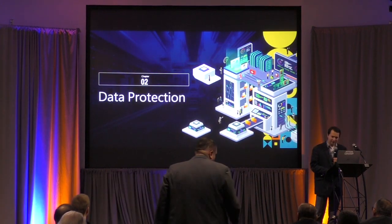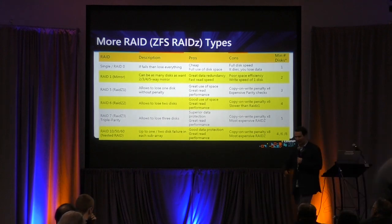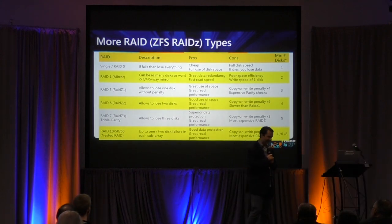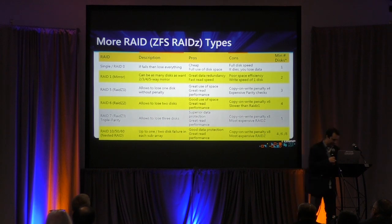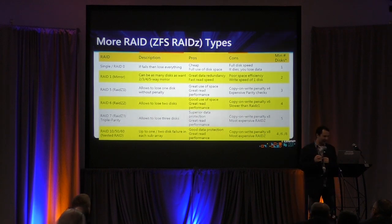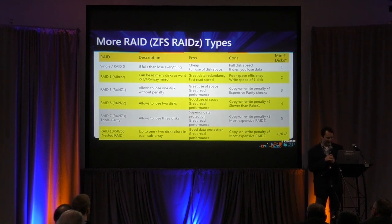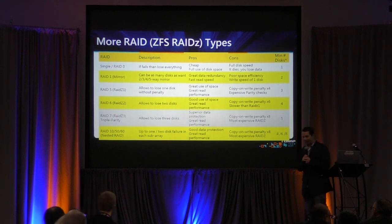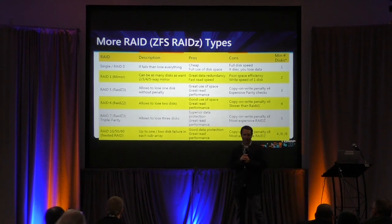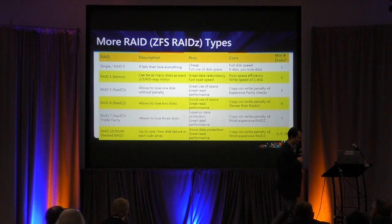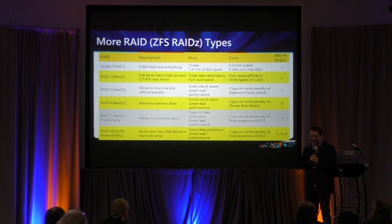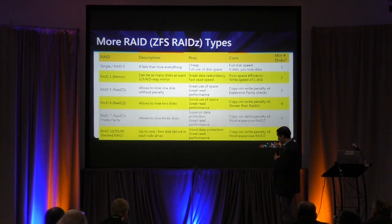Now let's talk about data protection. A lot of people like ZFS for data protection. We offer RAID 0, RAID 1, RAID Z1 (basically RAID 5 with ZFS), RAID Z2 (basically RAID 6), and we also support RAID Z3 — triple parity. You could lose three drives and still keep your data. We also support RAID 10, 50, and 60. Triple parity is a very safe RAID configuration.